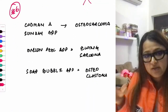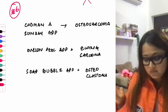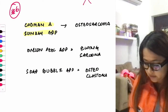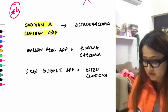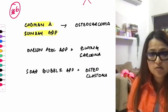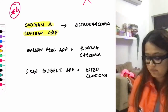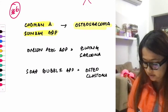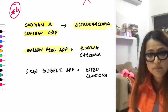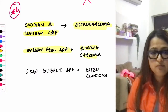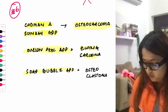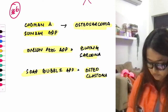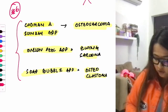Important keywords for bone tumors: Codman triangle or sunray appearance — osteosarcoma; onion peel appearance — Ewing's sarcoma; soap bubble appearance — osteoclastoma (giant cell tumor). These are three very high-yield points regarding bone tumors.